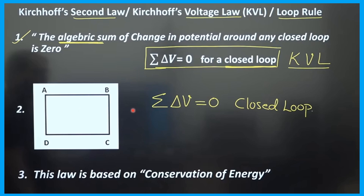Kirchhoff's second law states that the algebraic sum — summation of delta V — of change in potential around any closed loop is zero. This law is based on conservation of energy, which means energy can neither be created nor destroyed; you can only change it from one form to another. This is valid only for a closed loop.